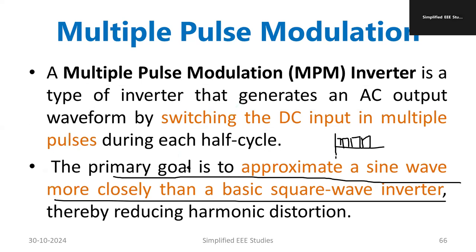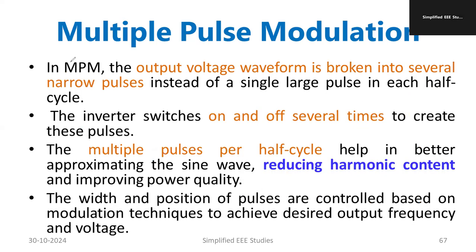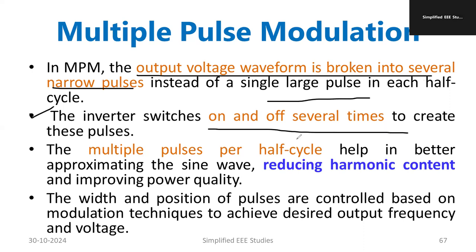Now, why we are using multiple pulse modulation — let me go into more details. The output waveform is broken into several narrow pulses, so instead of a single pulse, we get broken pulses. The inverter switches on and off several times to create these pulses. The peculiarity is that multiple pulses occur in each and every half cycle. This tries to convert the square wave into an almost sine wave — approximately, because we cannot claim it is a pure sine wave.